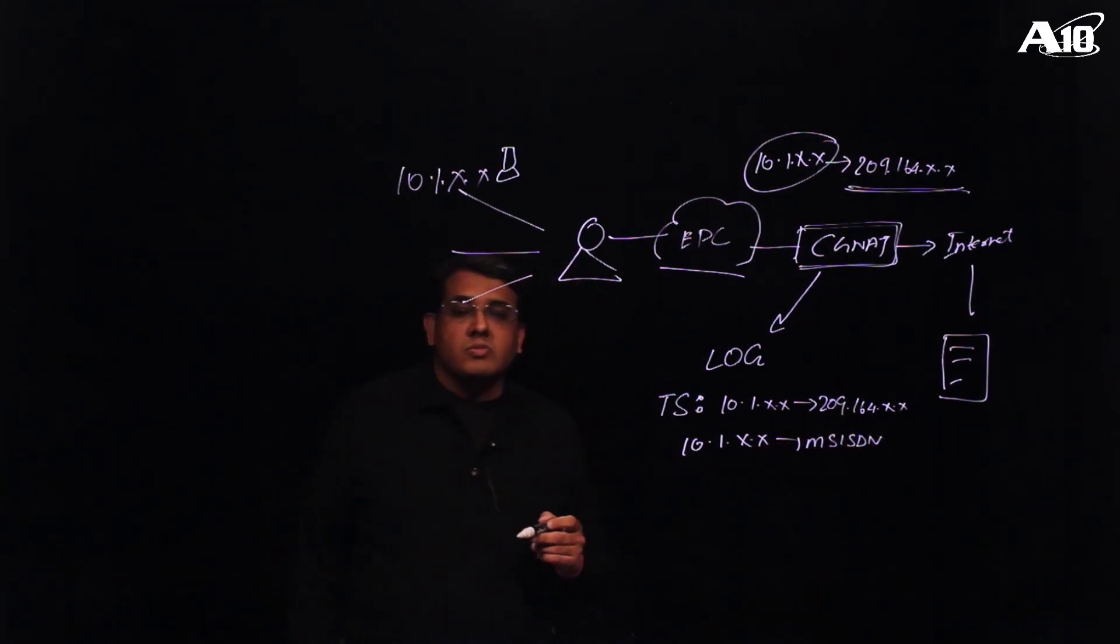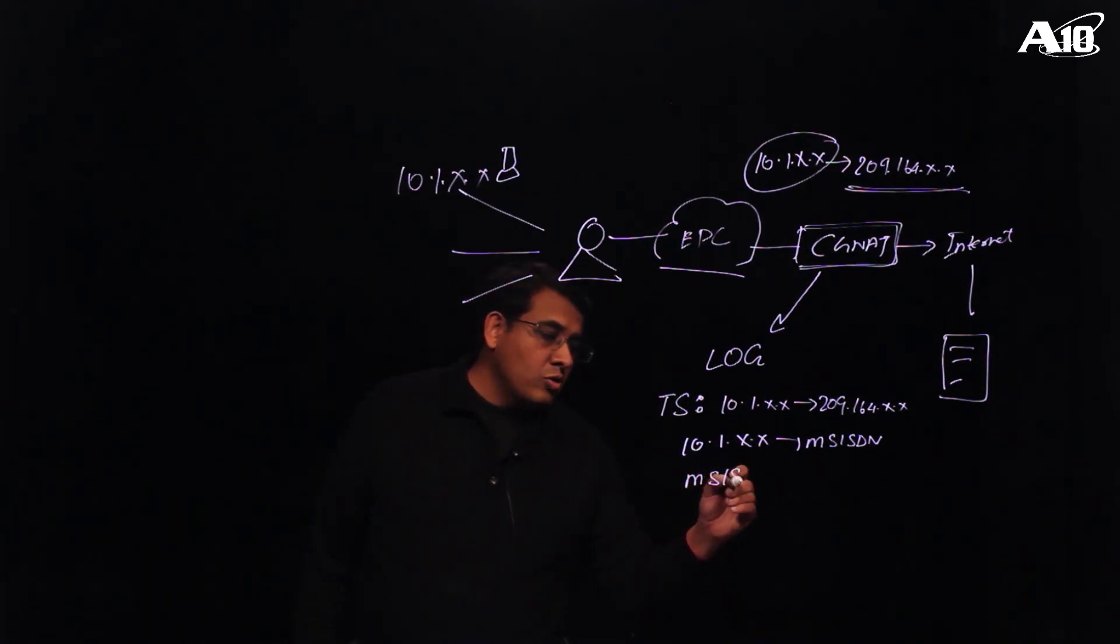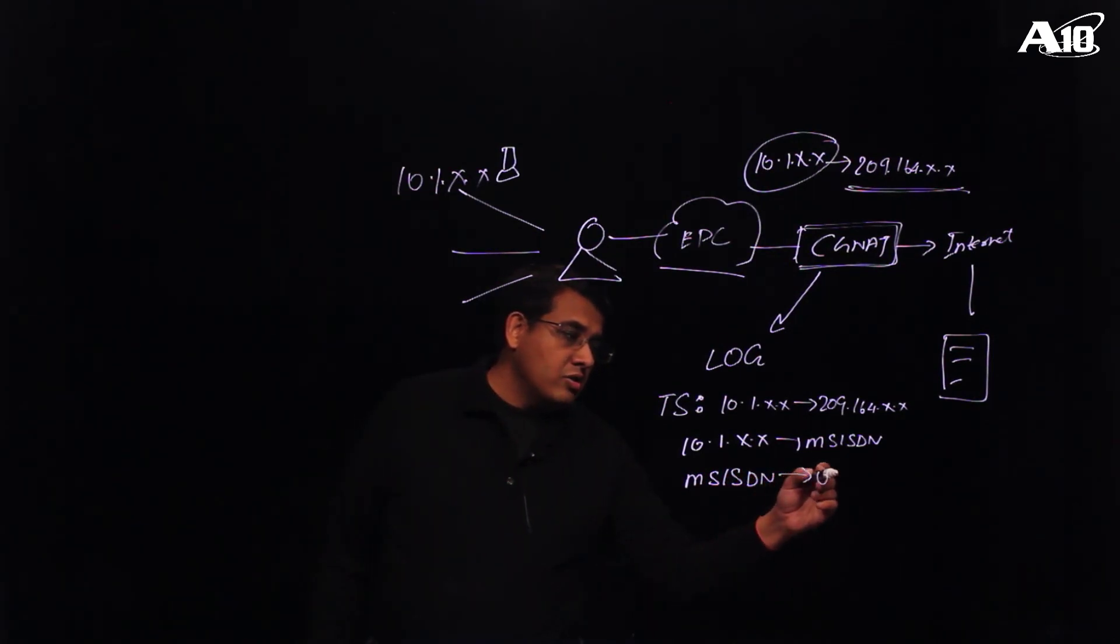This kind of information is maintained by another group in a telco environment. Now again, this is still not enough because what you really want to do is find out the end user ID. So this is now maintained in a third database. So now you have to go to a third group which maintains this information and actually map this to a username.